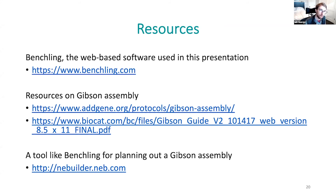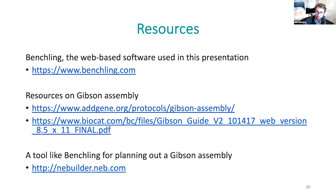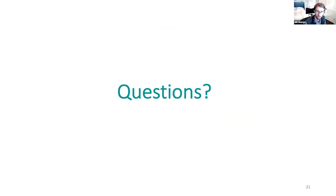A few resources: Benchling is what I used. Addgene and BioCat have good documentation on Gibson assembly — the BioCat resource is especially good for troubleshooting steps if things aren't working. If you don't want to use Benchling, another option is the NEB Builder, which has a whole mechanism for Gibson assembly, though it can be a bit tricky to use — follow their videos to get it working.